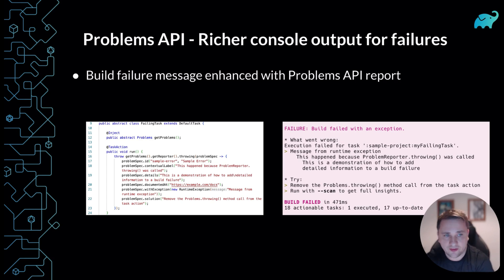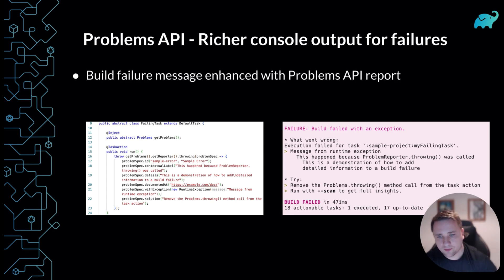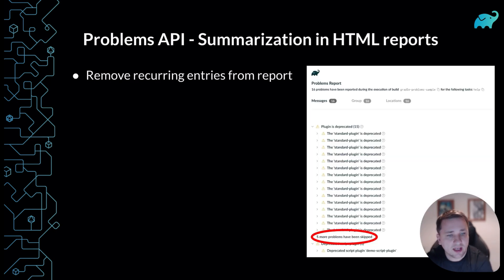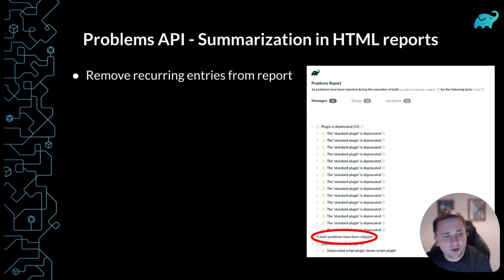In Gradle 8.12, we integrated the Problems API with build failures. If a Gradle build fails because of a problem report, the build failure message is enhanced with the report details. Regarding the beta HTML reports: in a previous release we introduced a summary HTML page displayed at the end of the build. In Gradle 8.12 we made it more robust by removing entries that recur many times during the build. The summary HTML document contains information on exactly how many entries were skipped.